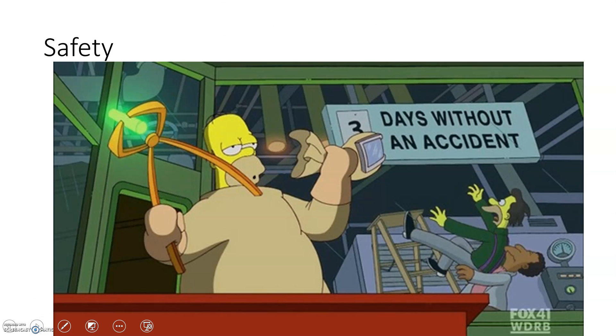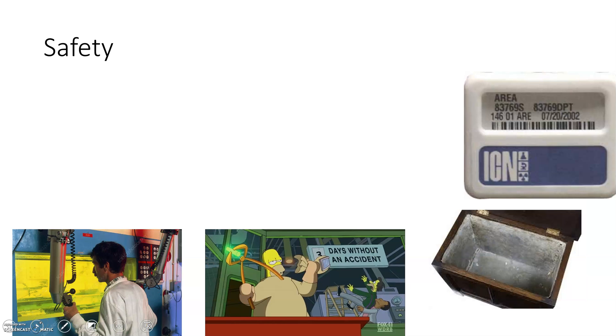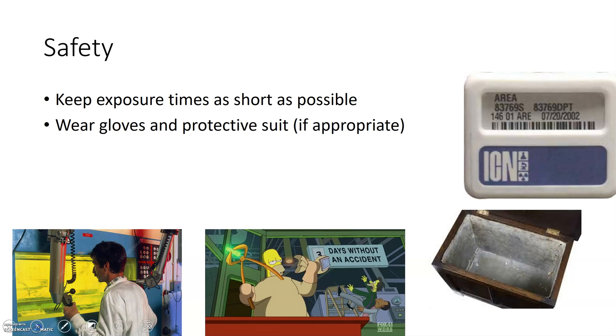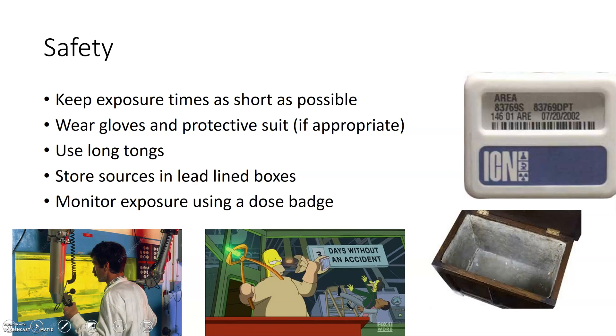How do you avoid this? Well there's a lot of ideas in this Simpsons image here. If it's particularly radioactive and there's a chance it could get on your hands you can wear gloves or a protective suit, although you don't often do that in a lab. What we do often use though is large tongs which you can see here. That keeps the radiation away from us and alpha can only go a certain distance as we know through air, about four centimeters, so we're going to be safe from alpha. So the key ideas are one, keep the exposure time as short as possible, two, wear gloves and protective suits if appropriate.